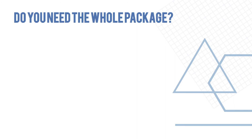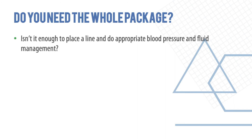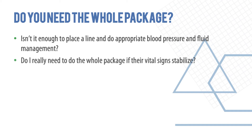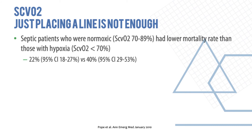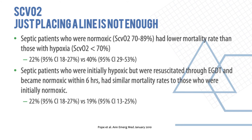The question arises: do you need the whole package, or is it enough to just place a line and manage blood pressure and fluids? The answer is yes — you need the whole package. Septic patients who were normoxic had lower mortality than those with hypoxia. Septic patients who were initially hypoxic but were resuscitated through early goal-directed therapy and became normoxic within six hours had similar mortality rates to those who were initially normoxic.